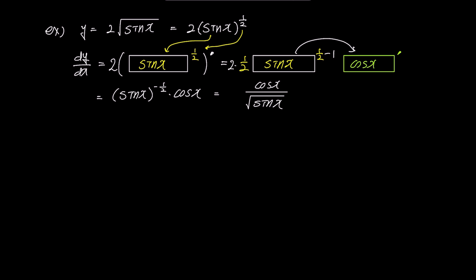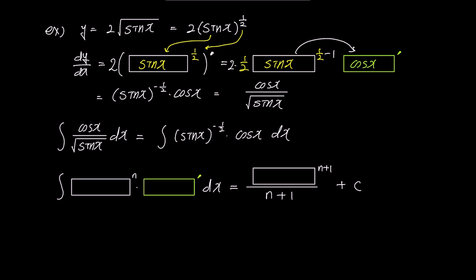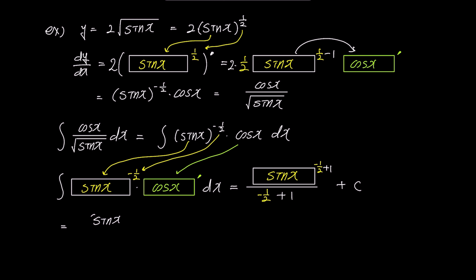We found the derivative easily. Now if we face the integration problem of cos x / √sin x, first rewrite it as (sin x)^(−1/2) times cos x dx to distinguish the box and box prime. Place sin x inside the box, set n to −1/2, and insert cos x as box prime. On the right side, sin x goes into the box and n becomes −1/2. Solving yields sin x^(1/2) / (1/2) + c, which simplifies to 2√sin x + c.